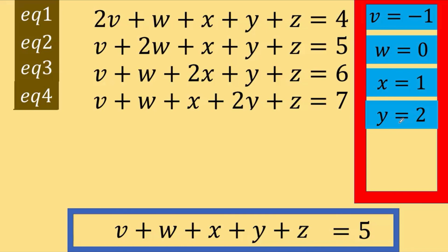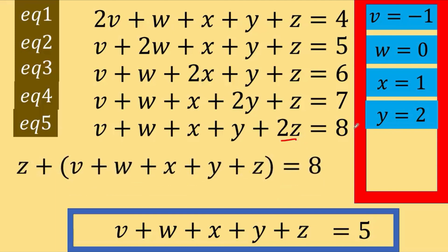Then lastly, go to equation number 5. Split this 2z as z plus z to arrive at this. This sum inside the parentheses is equal to 5. So, we have z plus 5 equals 8. Or z is equal to 8 minus 5, which is equal to 3. And that is the value of z.